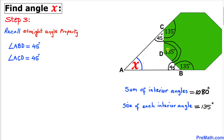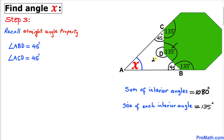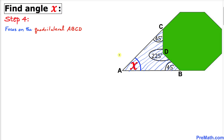Now let's focus on point D. We know the interior angle at D is 135 degrees and the full angle around a point is 360 degrees. So the reflex angle BDC is 360 minus 135 degrees, giving us 225 degrees.